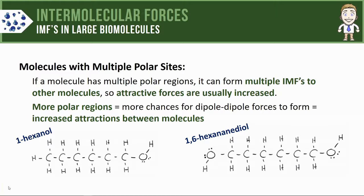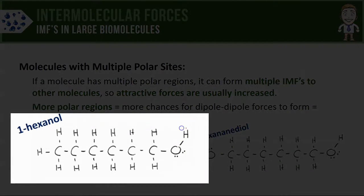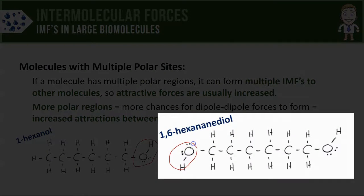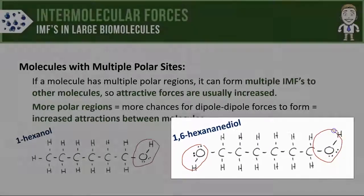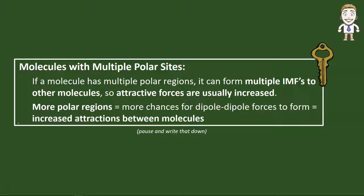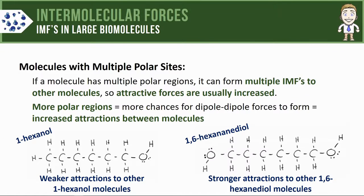We can use this to compare different substances like 1-hexanol on the left and 1,6-hexanediol on the right. 1-hexanol has just one polar region with oxygen bonded to hydrogen, whereas 1,6-hexanediol has two. Based on that, 1,6-hexanediol molecules will form stronger attractions to other 1,6-hexanediol molecules, while 1-hexanol will form weaker ones. That's one of the key ideas for this video — make sure to pause and write it down.